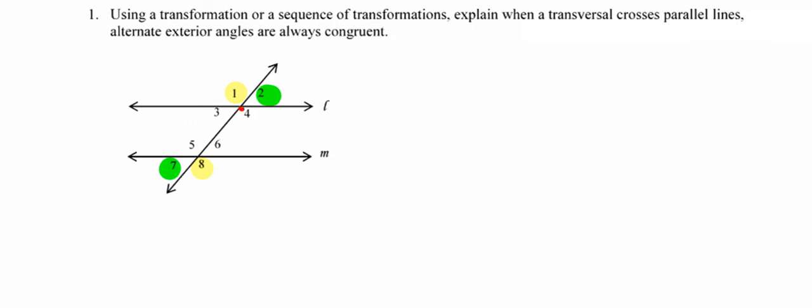In order to do the translation however I need to have a vector. Remember a translation has to name both direction and distance. I'm going to call one of those red dots A, the other red point B, just so that I have some point of reference to talk about. So I'm going to translate angle one along vector AB and then once he's superimposed on angle five I'm going to rotate him 180 degrees around point B which will map him onto angle eight.